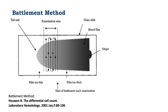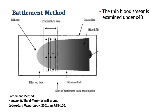The method used to do the differential white blood cell count is not haphazard. It is very strategic and the battlement method is preferred. You have to look for a thin area on the smear which is a monolayer, and this you can do under a magnification of times 40.